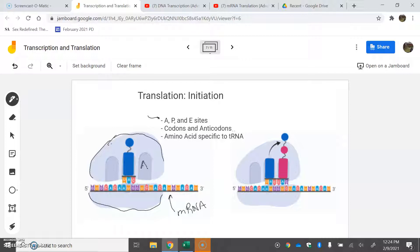We're going to label them. The A stands for arrival, P is processing, and E is eject. So you have the arrival, processing, and ejection sites on the ribosome. We'll see how that works here in a second.